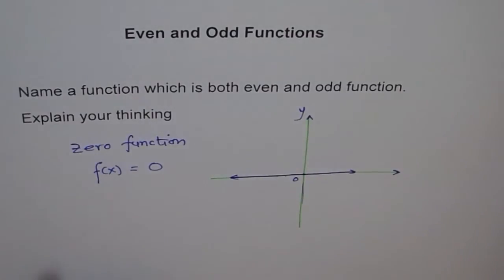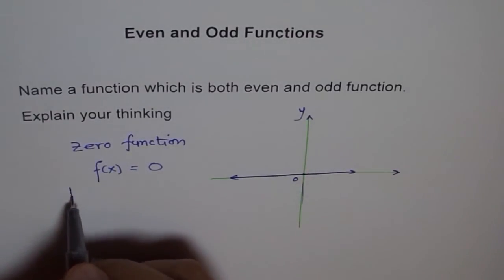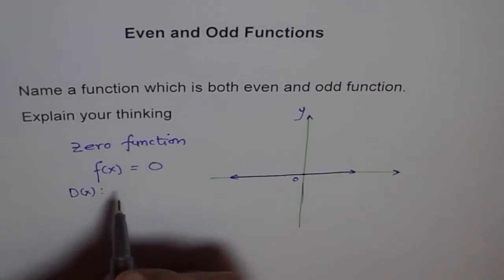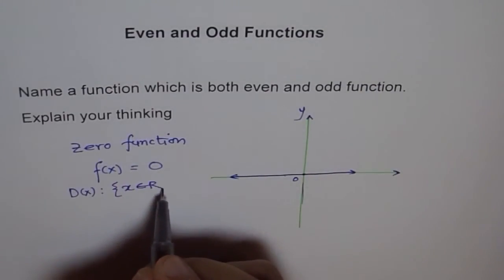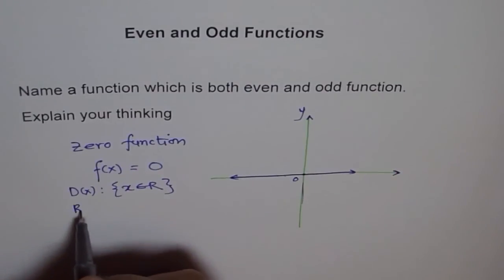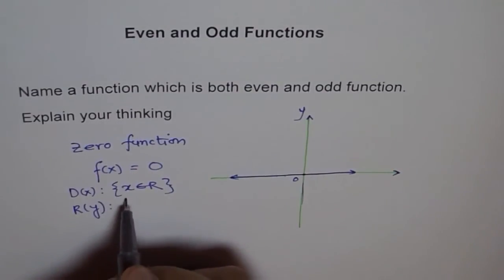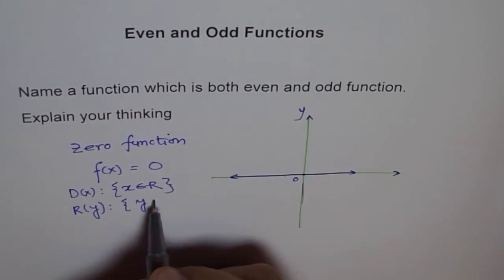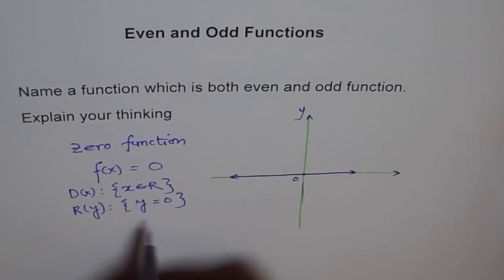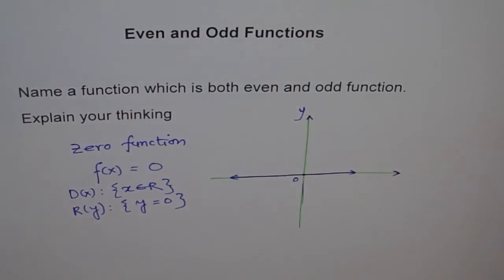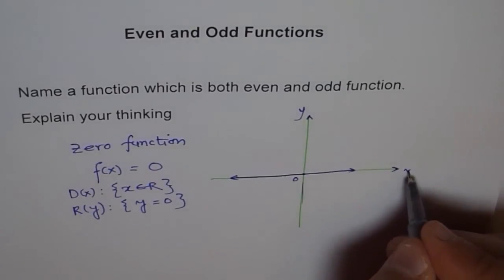Can you tell me the domain range for this function? Domain of this function is x belongs to real numbers. And the range of the function is y equals to 0. At every point, the x-axis itself, do you see that?